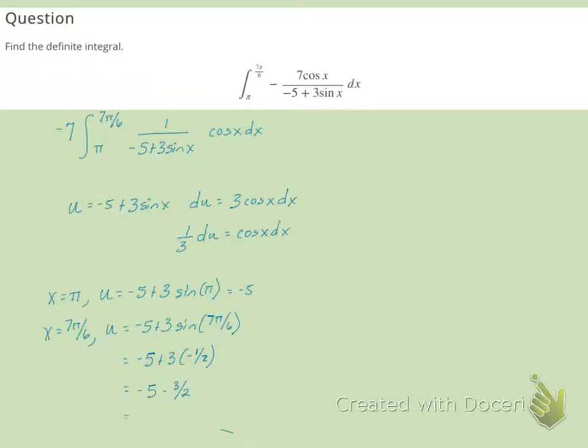And when we find a common denominator, we'll get negative 13 halves.